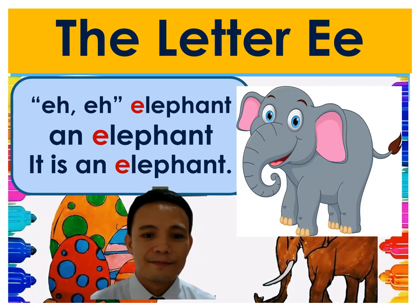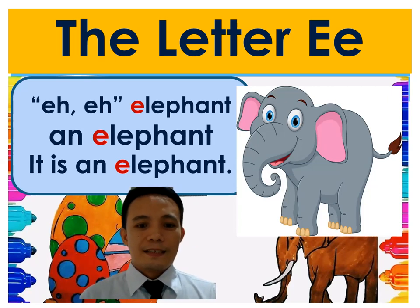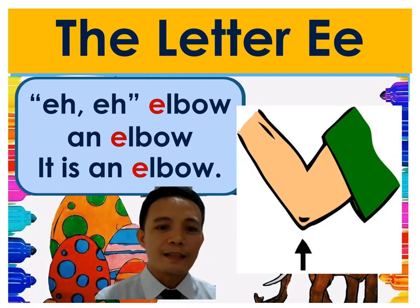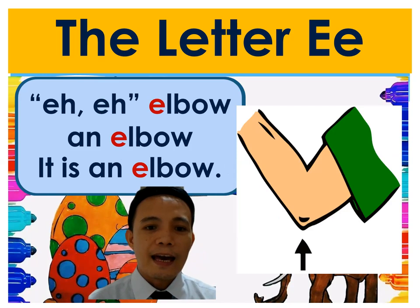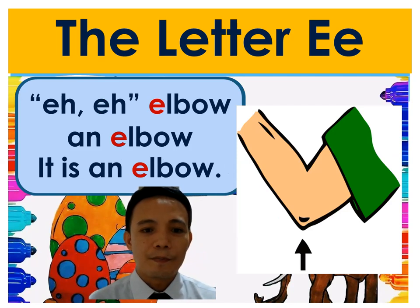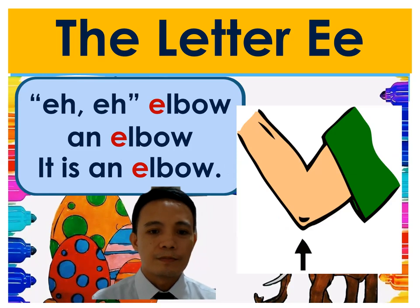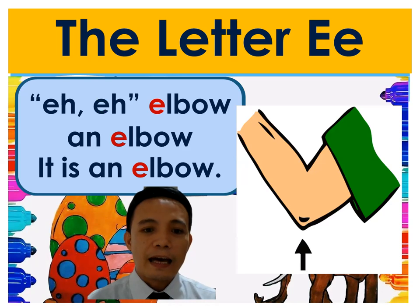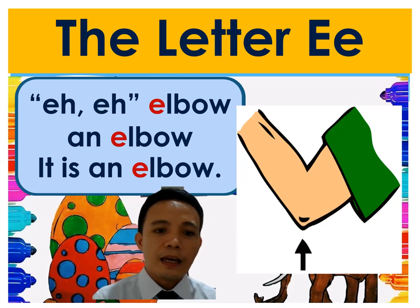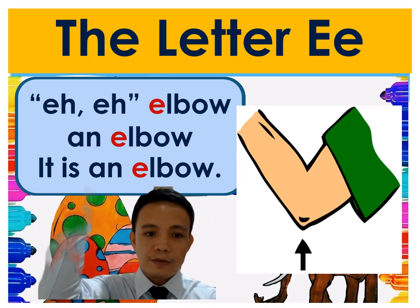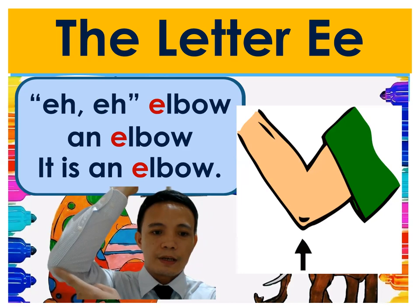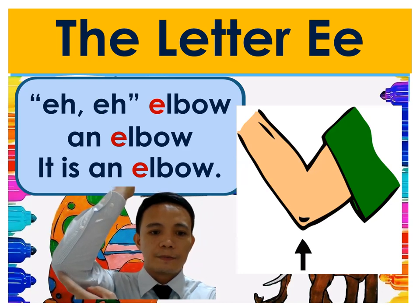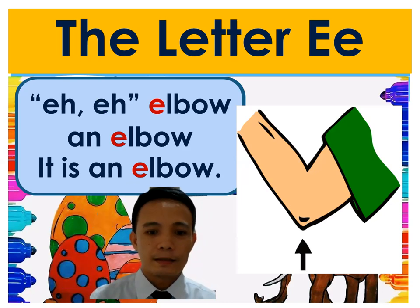Next picture — what is it? Eh, eh, elbow. It is an elbow. This is your elbow — can you see it? This is your elbow.